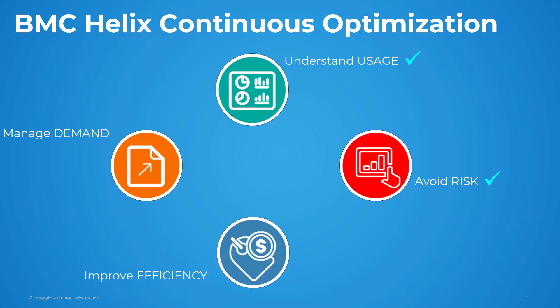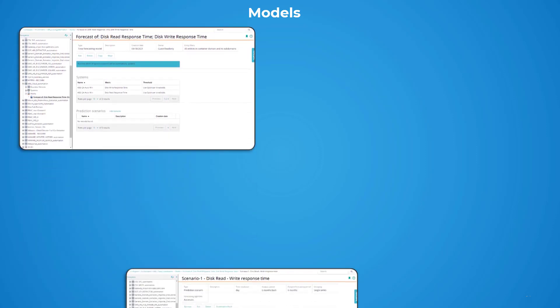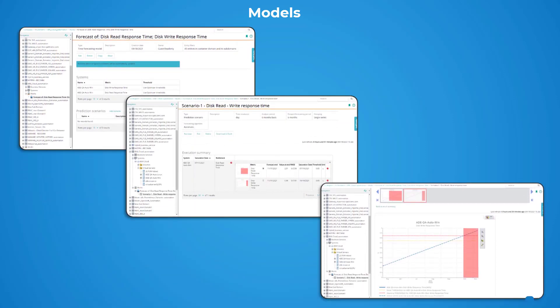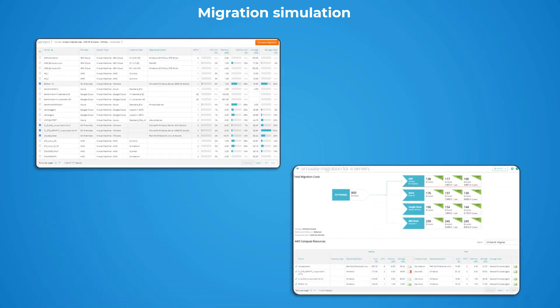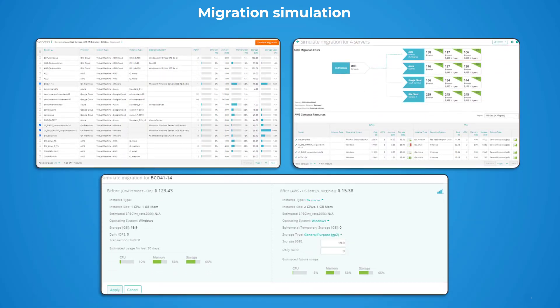Now, let us see how we can manage the ongoing demands of the business by predicting the infrastructure needs, estimating whether the existing infrastructure is adequate to meet the current and future demands, and plan accordingly for the new infrastructure. Use models to evaluate historical data, predict future behavior, and simulate what-if scenarios. Migration simulation is another powerful feature that helps you plan your move to the cloud with right-sizing recommendations. This helps to review future cost estimates of on-premises to cloud, or even cloud-to-cloud migrations.